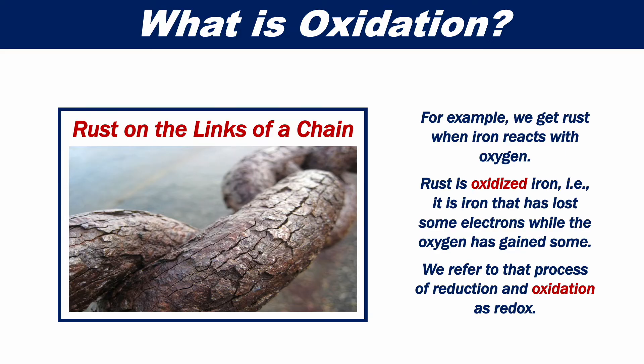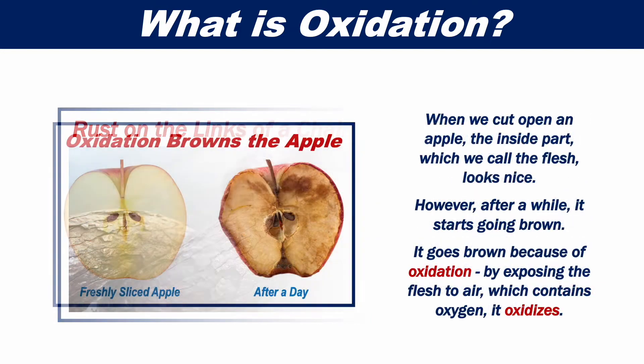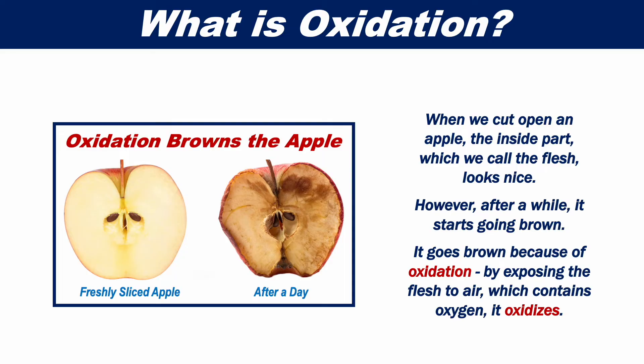We refer to that process of reduction and oxidation as redox. When we cut open an apple, the inside part, which we call the flesh, looks nice. However, after a while it starts going brown because of oxidation — by exposing the flesh to air which contains oxygen, it oxidizes.